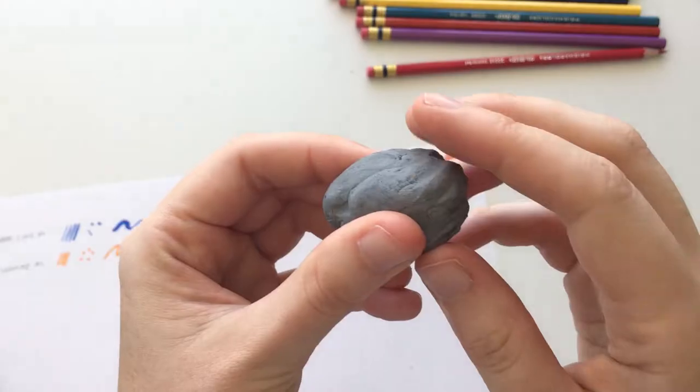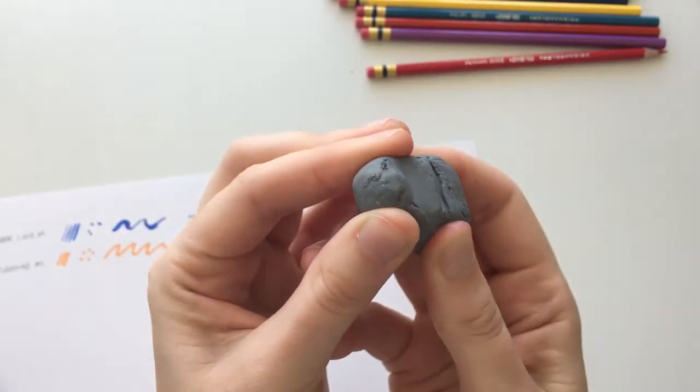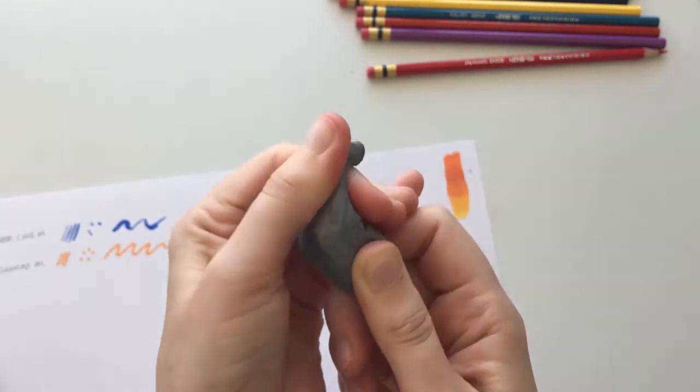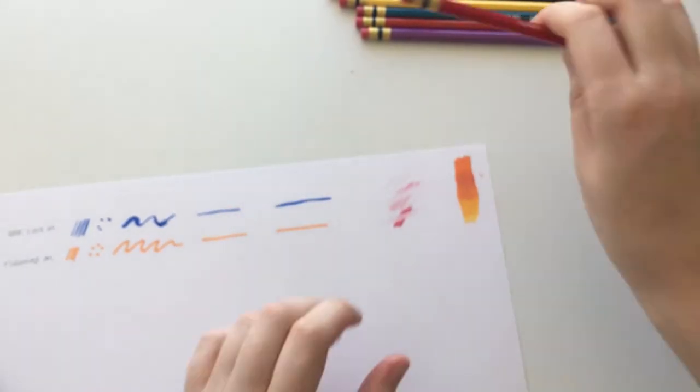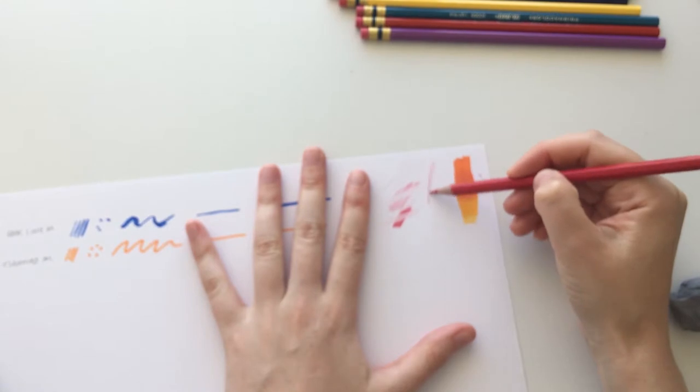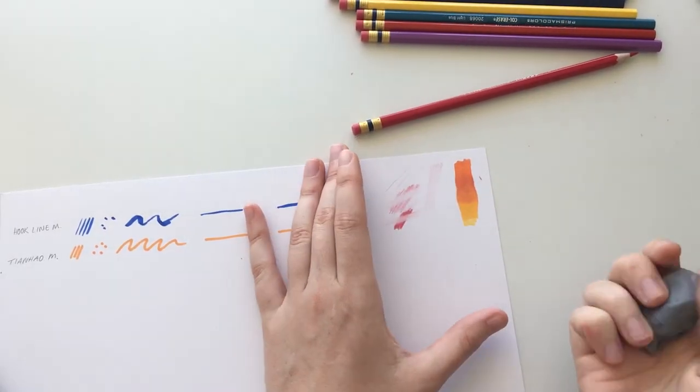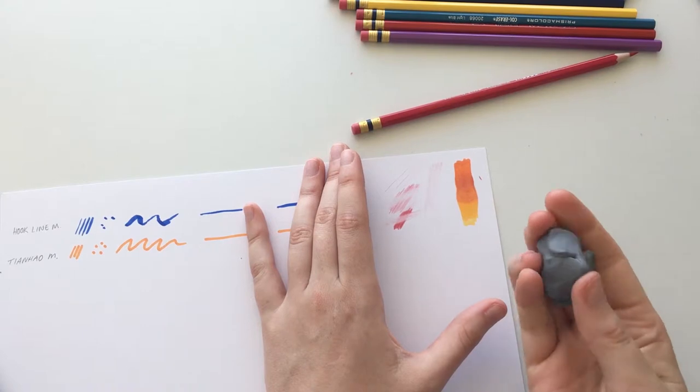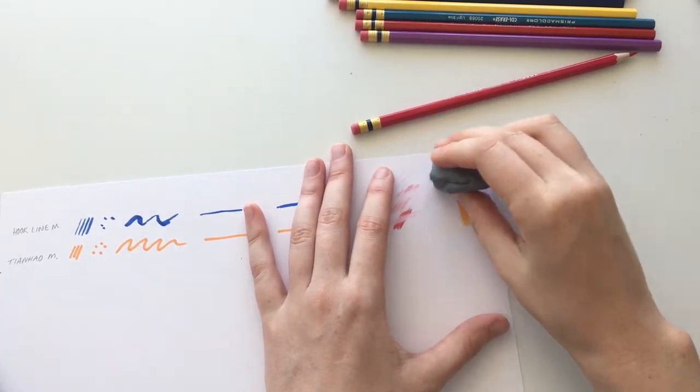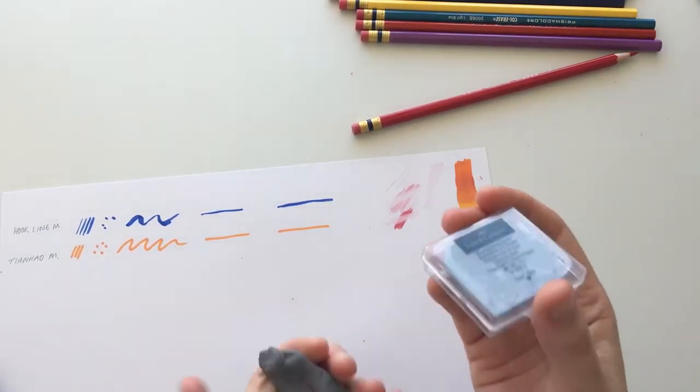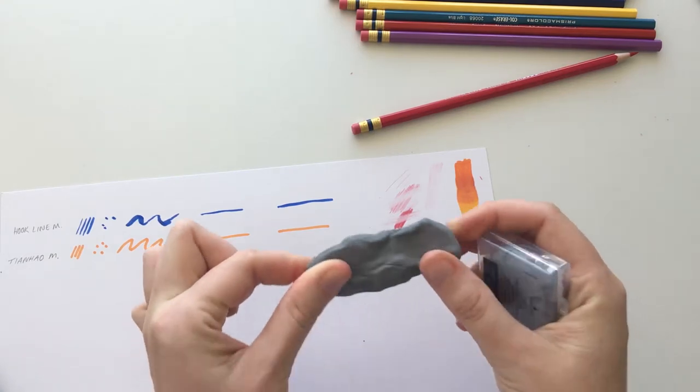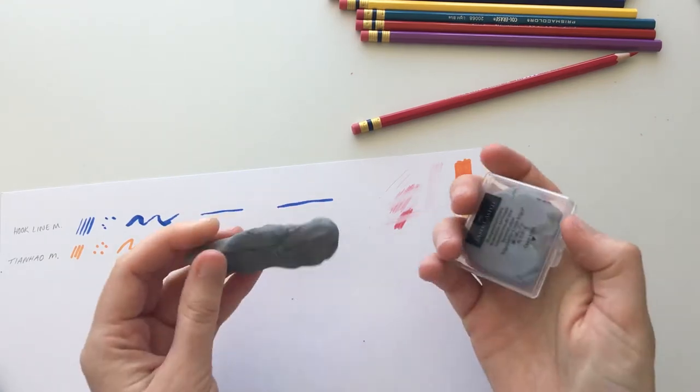So I actually bought a brand new kneadable eraser as well. This one's by Faber-Castell, and I love that it comes in this little tiny box as well, which is great because when I pop this in my pencil case, it's not going to get all gross. It's picked up some friends along the way. I want to see if this will erase with a kneadable eraser as well. Wow, does that work better? Probably. Kneadable erasers are the best.